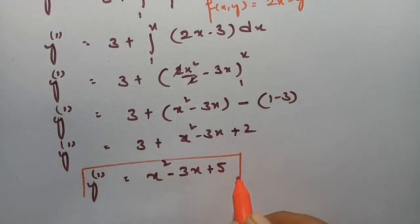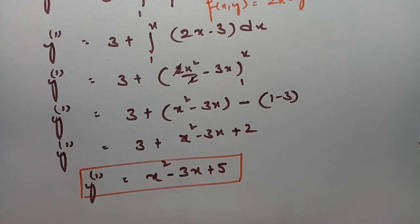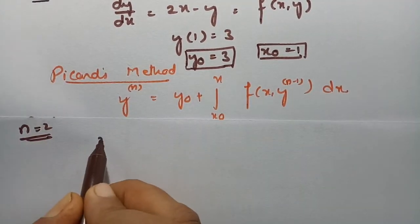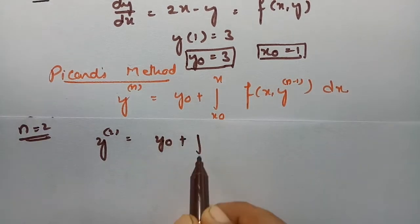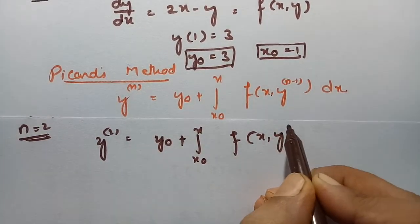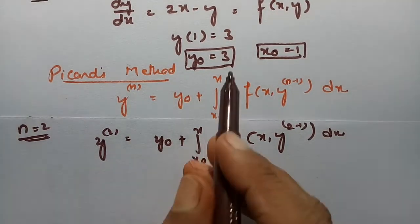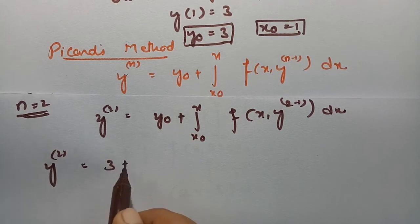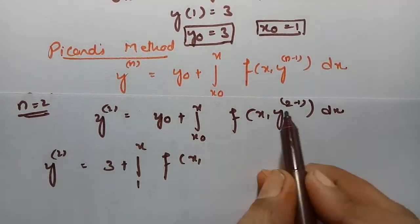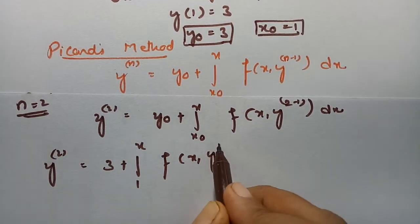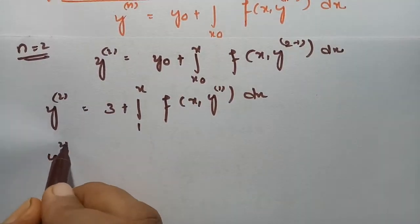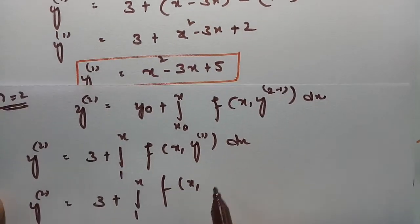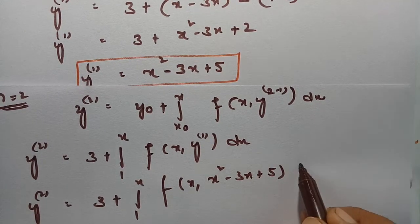So the first successive approximation is y₁ = x² - 3x + 5. Now for Picard's method we keep n = 2. The second successive approximation is y₂ = y₀ plus integral from x₀ to x of f(x, y₁) dx. y₀ = 3, x₀ = 1, so this is 3 plus integral from 1 to x of f(x, y₁) dx, substituting y₁ = x² - 3x + 5.